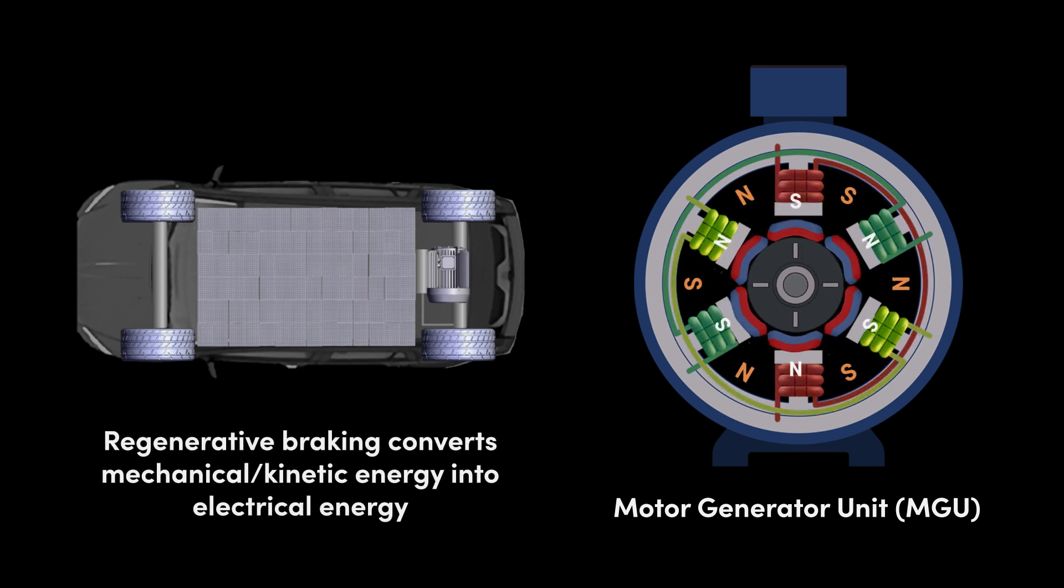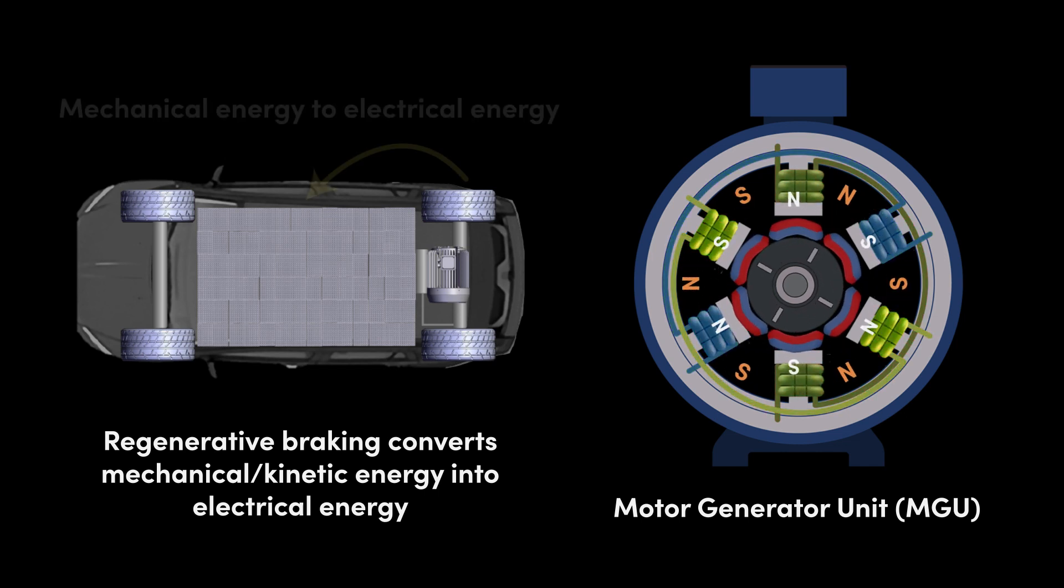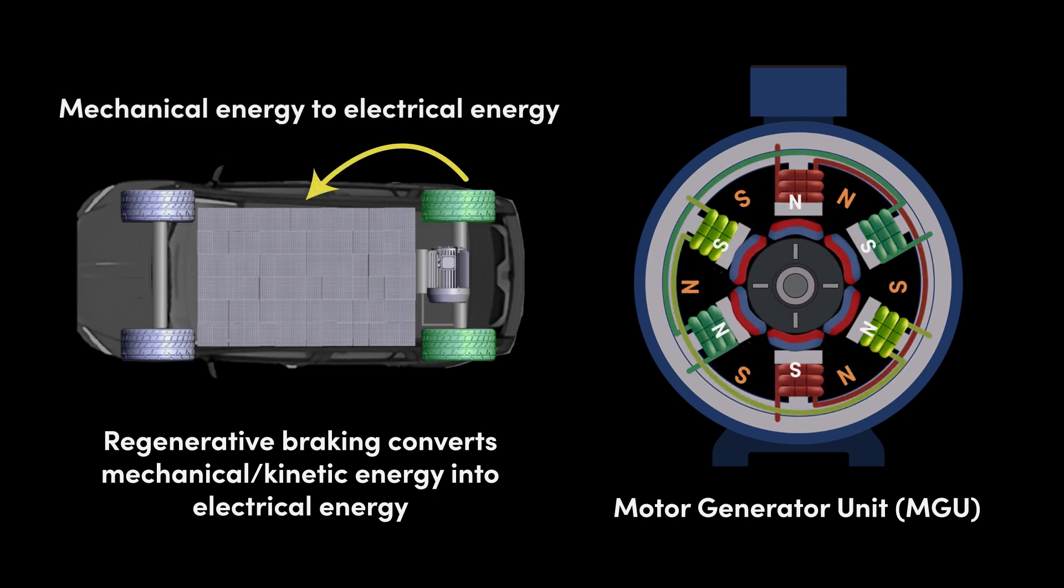When the vehicle is decelerating, the wheels are essentially freewheeling, which rotates the magnet at the center of the MGU, and as the magnetic field intersects the copper coils, currents are induced. The MGU is thereby converting mechanical energy, that's rotation of the vehicle's wheels, into electrical energy, or electricity. That electricity is then used to charge the battery pack.